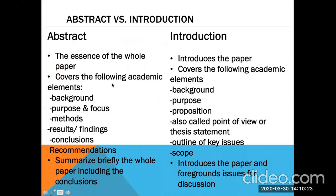An abstract covers academic elements such as background, purpose and focus, methods, results, findings, conclusions, and recommendations. It briefly summarizes the whole paper including your conclusions. It is like an outline, especially for the descriptive type of abstract.